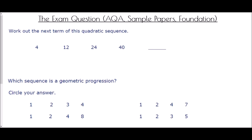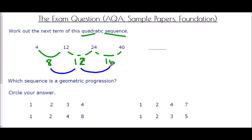We're going to end with exam questions from AQA sample papers — all foundation level. Working out the next term of a quadratic sequence: the first differences are 8, 12, 16. The difference between those differences is 4 each time. So the next first-difference is 20, meaning the next term in the sequence is 40 plus 20, which is 60.